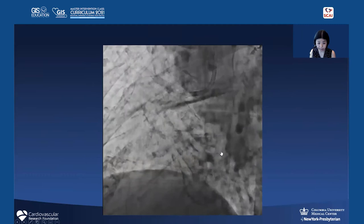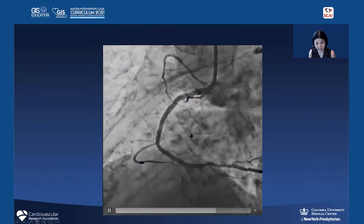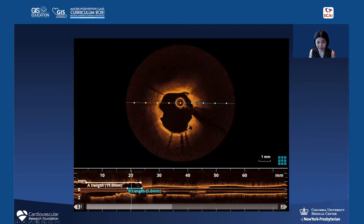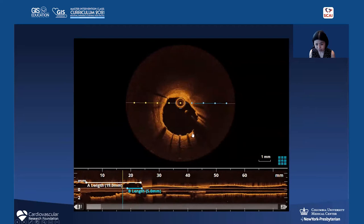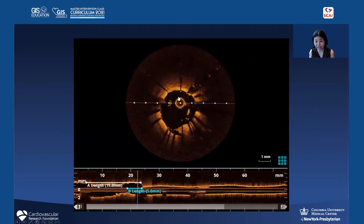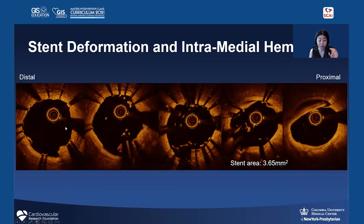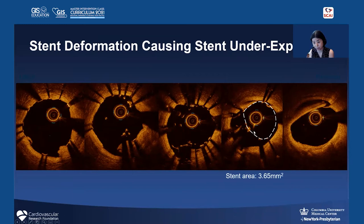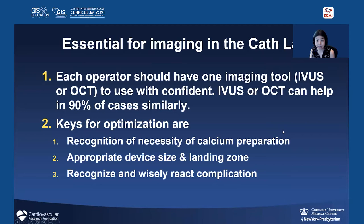My final case looked like very good stent expansion in the left coronary artery on OCT — good expansion throughout — but at the very end there was stent deformation due to the guiding catheter, causing a very small final stent area, plus a hematoma at the edge. To summarize my key messages: each operator should be confident with one imaging modality — either IVUS or OCT. Use it for recognition of calcium, appropriate device sizing, correct landing zone selection, and recognize and wisely react to complications.